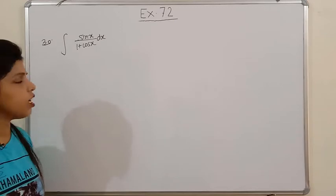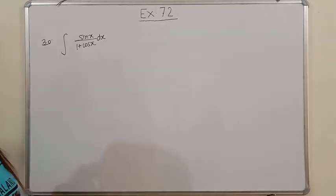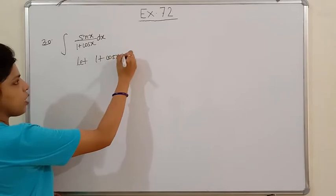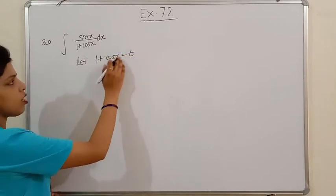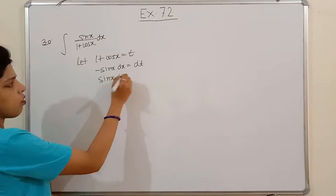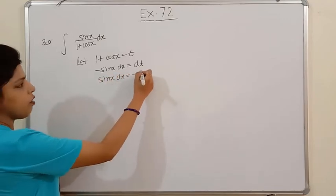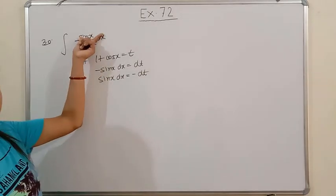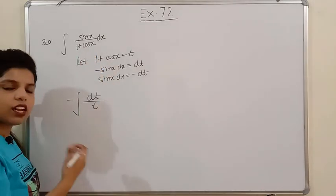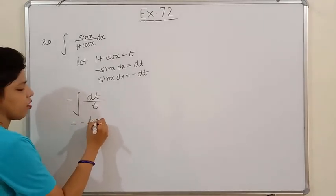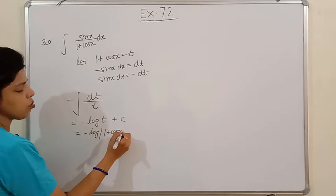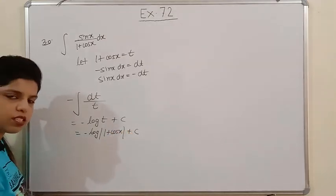Next is question 30: integration of sinx/(1+cosx). Here everything is direct — the function is (1+cosx) and sinx is its derivative (with a sign). Let 1+cosx = t. The derivative of 1 is 0, and the derivative of cosx is −sinx dx = dt. So sinx dx = −dt. Substituting: −dt/t. The integration of 1/t is log t, so the answer is −log(1+cosx) + c. Please note down.